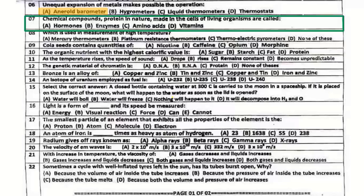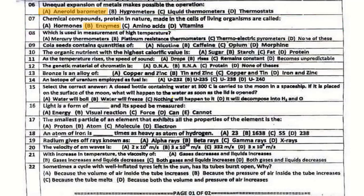Question number 7: Chemical compounds, protein in nature, made in the cells of living organisms are called enzymes.